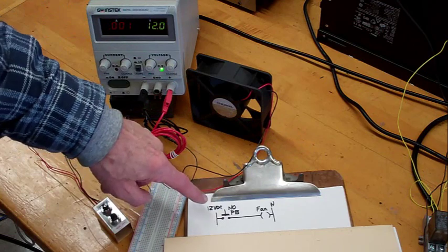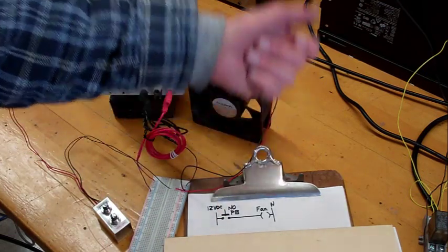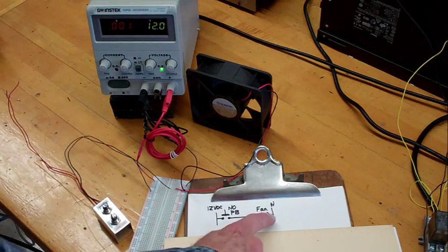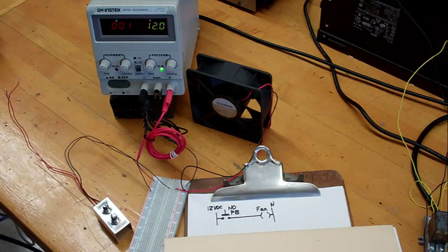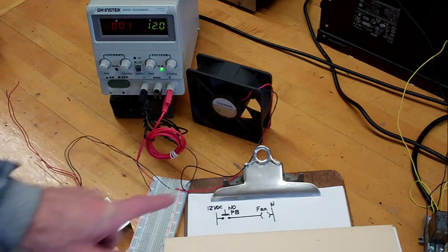The power supply is shown here, 12 volts DC power rail on the left, the neutral rail on the right, and the rung which contains the fan and the normally open push-button switch.